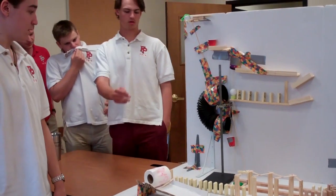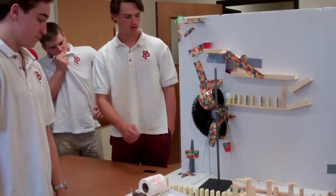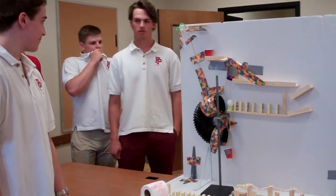So we have the simple machines, an incline plane, a wheel, and then a lever, and a pulley. Alright, start it off.